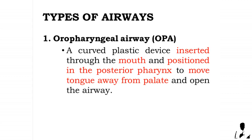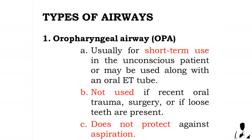One: the oropharyngeal airway, or OPA. It is a curved, semicircular, tube-like plastic device inserted through the mouth and positioned in the posterior pharynx to move the tongue away from the palate and open the airway. It is usually for short-term use in the unconscious patient, or may be used along with an oral endotracheal tube.